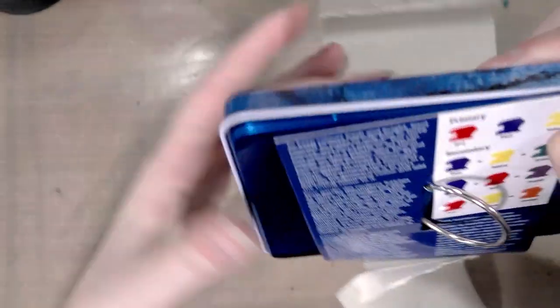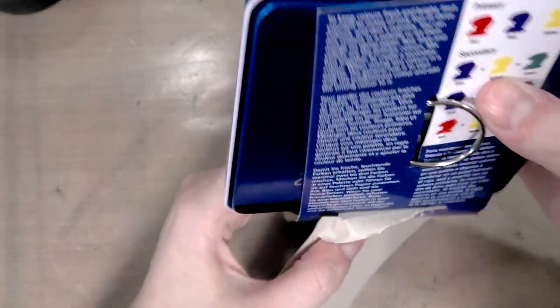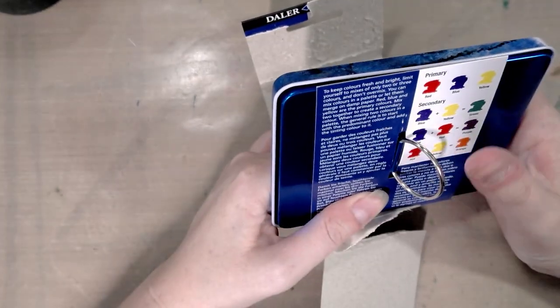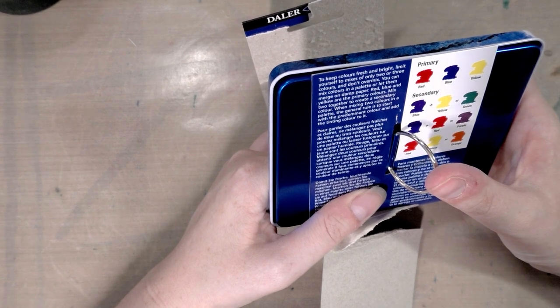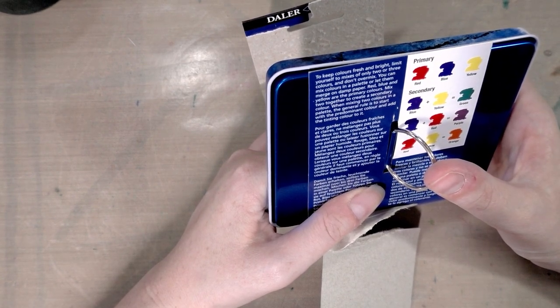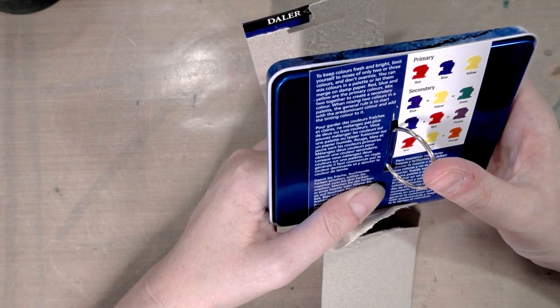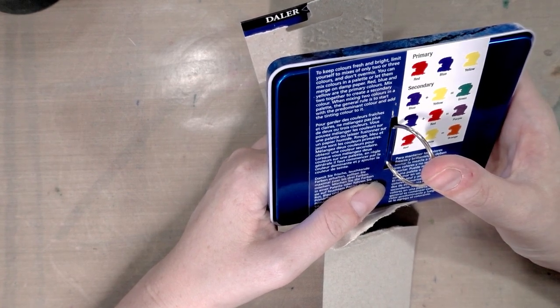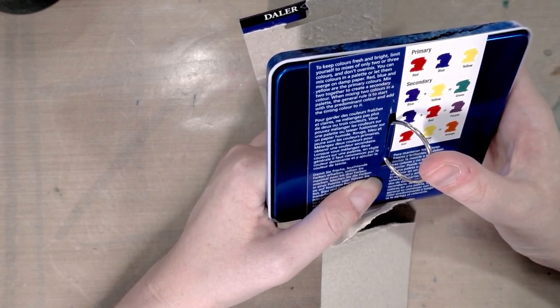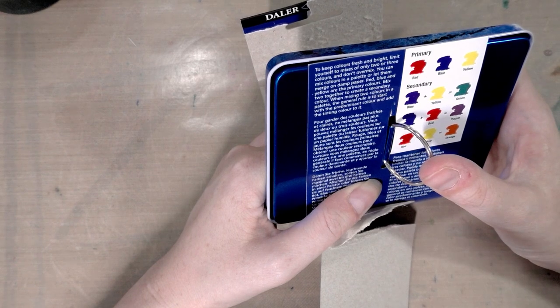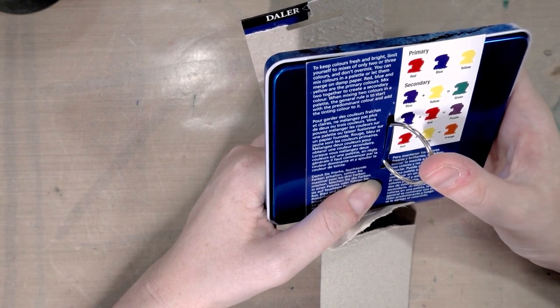Hidden underneath it says to keep colors fresh and bright, limit yourself to mixes of only two or three colors and don't over mix. You can mix colors in a palette or let them merge on damp paper. Red, blue, and yellow are the primary colors. Mix two together to create a secondary color.